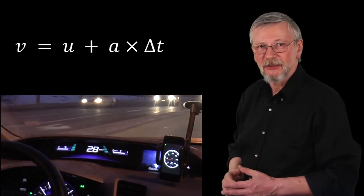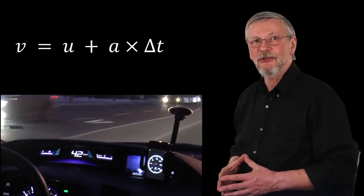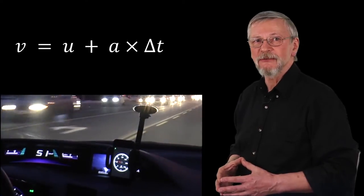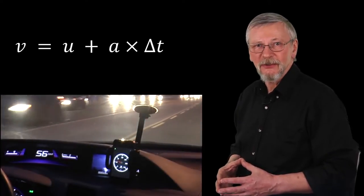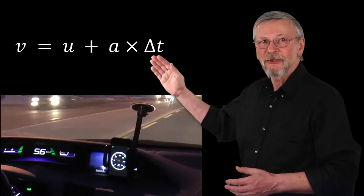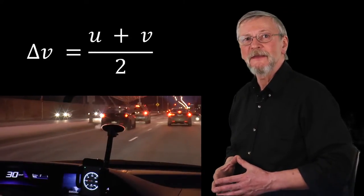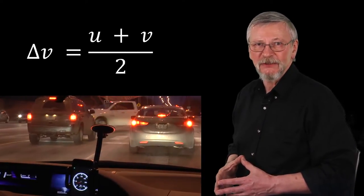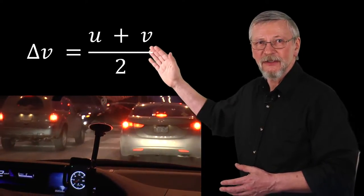For objects that are accelerating, velocity is calculated as follows. If an object is accelerating at a constant acceleration a with the initial velocity u for a period of time delta t, the final velocity v is calculated using this formula. If an object is moving with a constant acceleration a, the initial velocity u and a final velocity v, the average velocity is calculated using this formula.